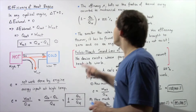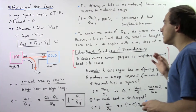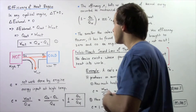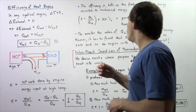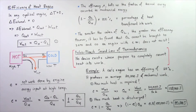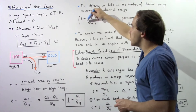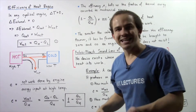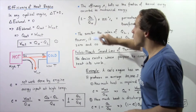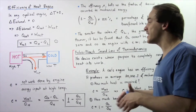The efficiency E of the heat engine tells us the fraction of thermal energy that is converted into mechanical energy — the fraction of heat that is transformed into work. Multiplying by 100% gives us the percentage of heat transformed into work. Notice that if Q_L becomes very small, the fraction Q_L divided by Q_H approaches zero, and if Q_L equals zero, the efficiency becomes 1. An efficiency of 1 means the engine is 100% efficient in converting heat into work. The smaller the value of Q_L, the greater the efficiency.